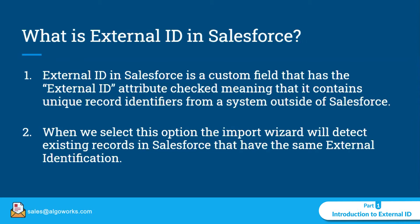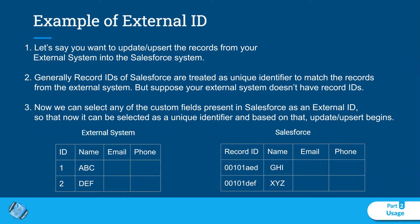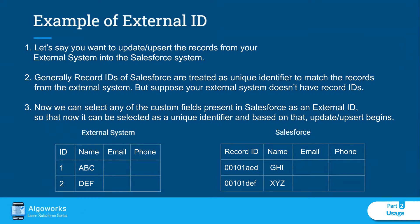Let's jump into an example for a better understanding. Let's say you want to update or upsert records from your external system into Salesforce. In the matrix below, you can see an external system with attributes like ID, name, email, and phone. Within Salesforce, you have attributes like the Record ID — which is the unique ID in Salesforce — plus name, email, and phone.